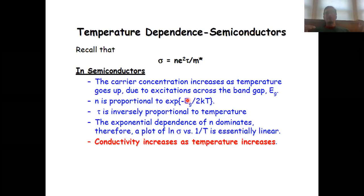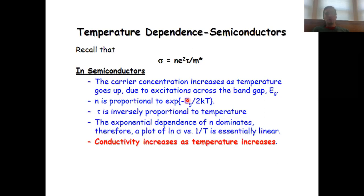This is also how you can experimentally very easily distinguish between a metal and a semiconductor or an insulator — just do a temperature-dependent electronic conductivity measurement. If the electronic conductivity decreases with temperature, then you have a metal. When the electronic conductivity increases with temperature, then you have a semiconductor or an insulator.